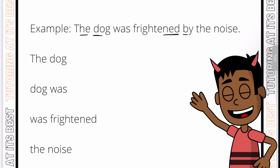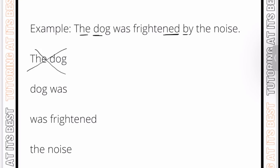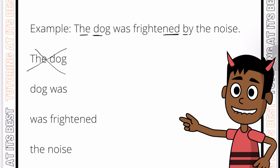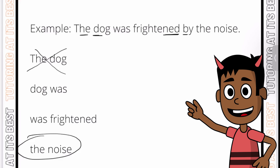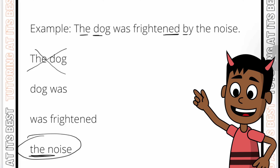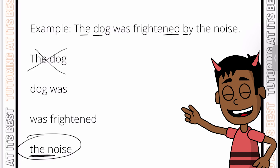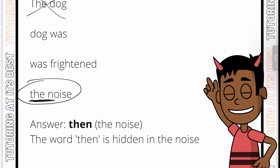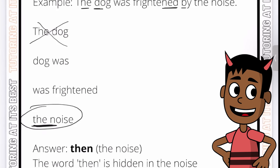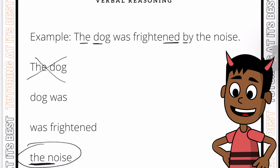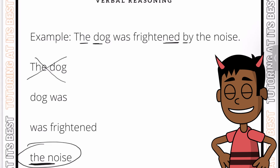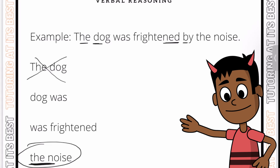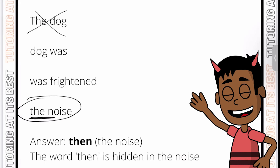We've already gone through 'the dog' so we can cross that out. As we can see, we get a four-letter word instantly which is between 'the' and 'noise' — and that is 'then.' So the last three letters of 'the' and the first letter of 'noise' give us 'then,' which is hidden in 'the noise.' If a word is three letters or even two letters, you can use the entire word itself, as long as the result is a four-letter word overall.